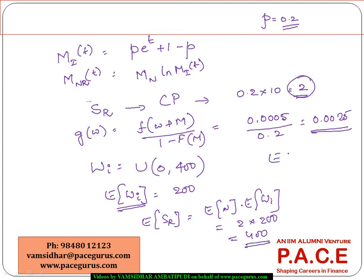Similarly, we can compute E[W_i²] and E[W_i³] using this mechanism to get the variance and skewness, and it leads to the same result as the original approach. The key takeaway is: in case there is reinsurance, how do we take into consideration the aggregate loss distribution for both the reinsurer as well as the original insurer — and these calculations simplify the entire process.